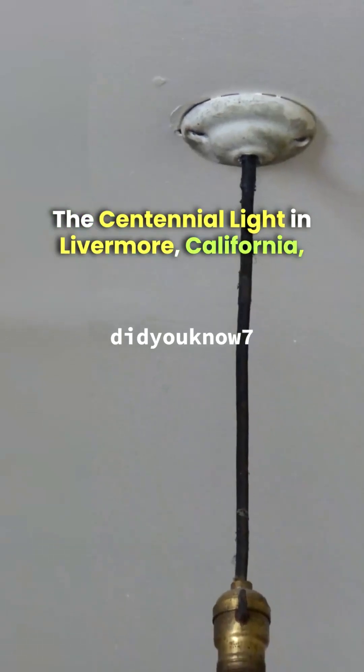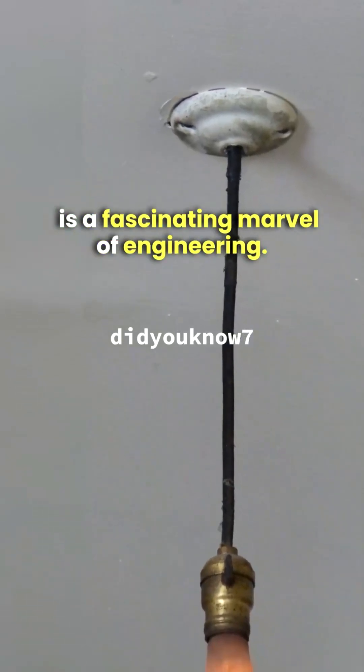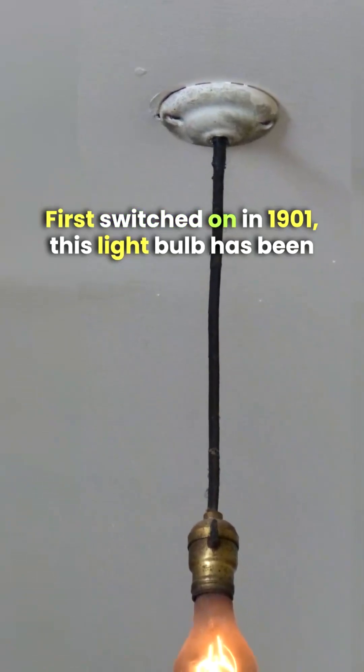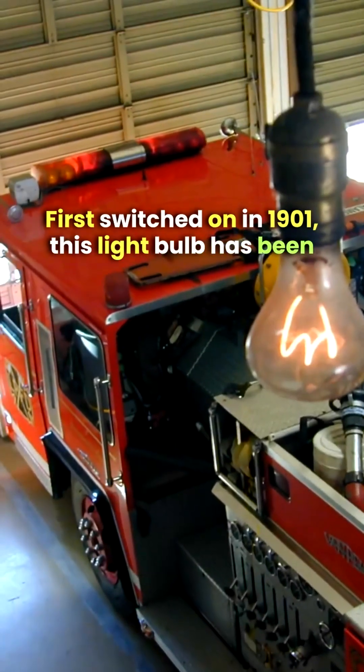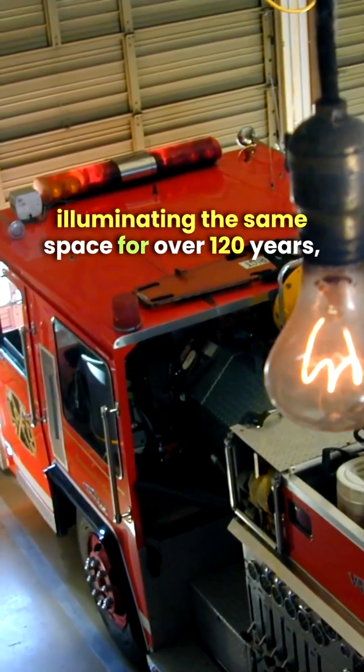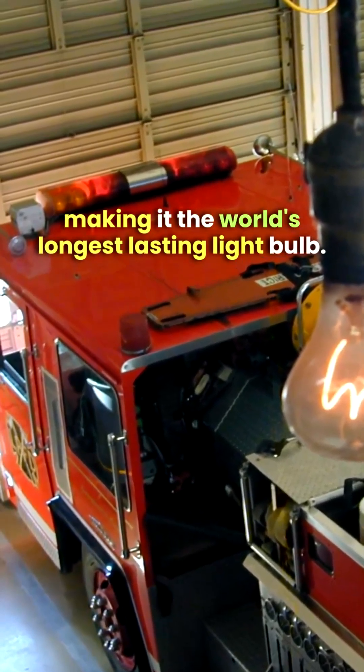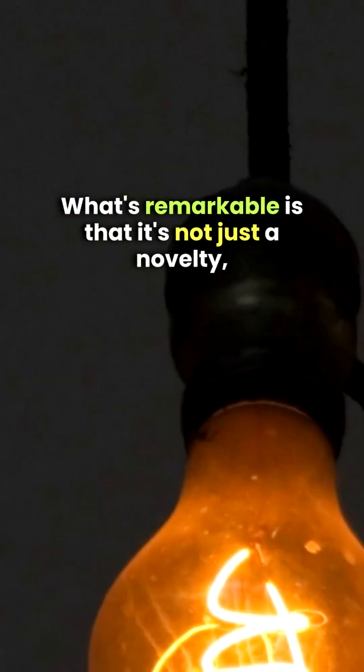The Centennial Light in Livermore, California is a fascinating marvel of engineering. First switched on in 1901, this light bulb has been illuminating the same space for over 120 years, making it the world's longest lasting light bulb.